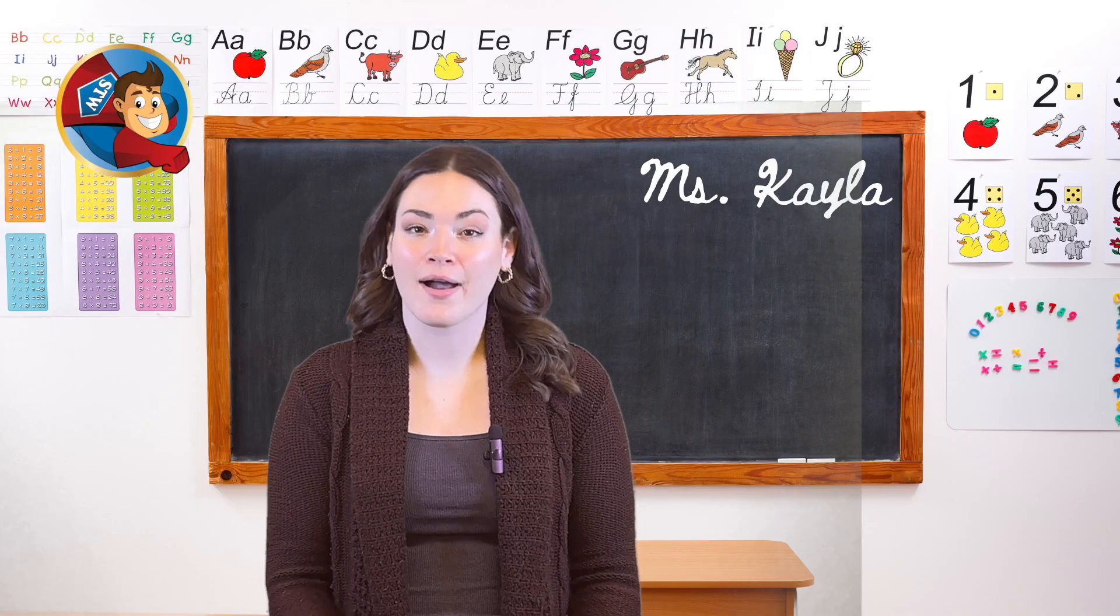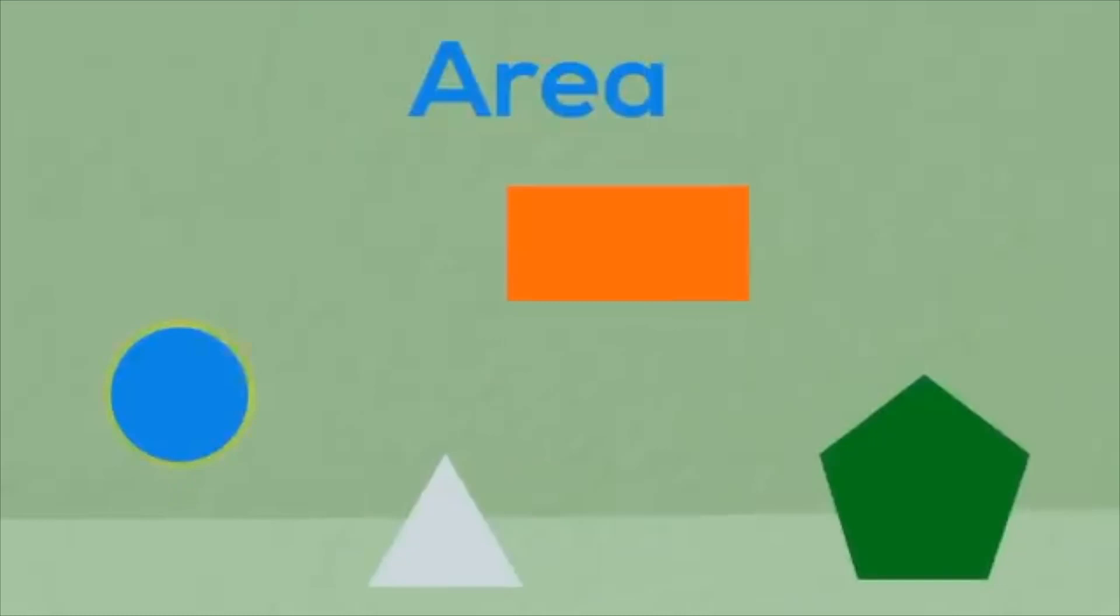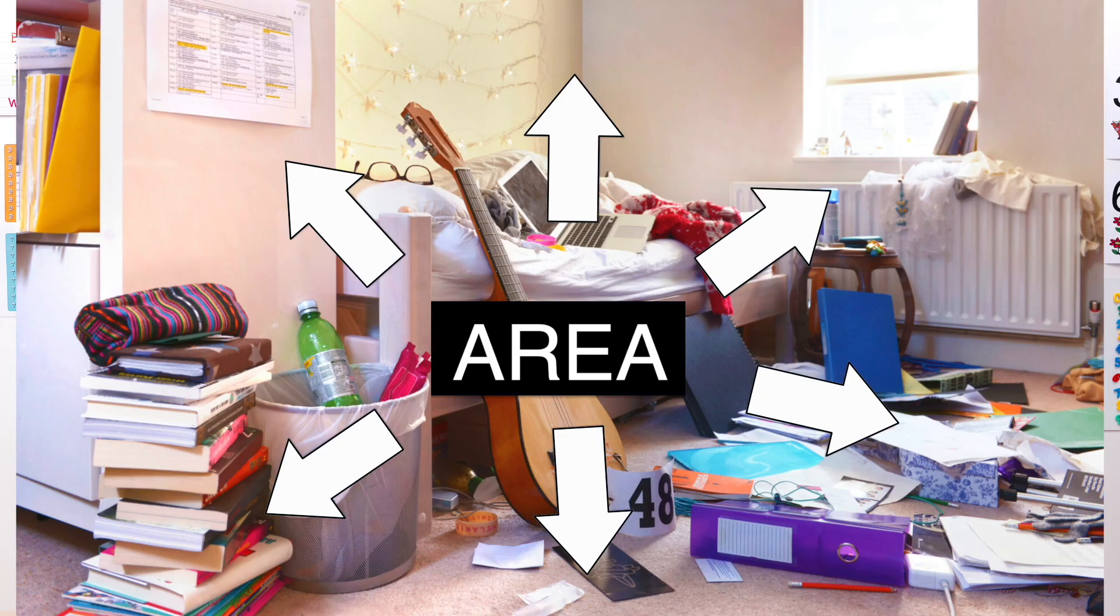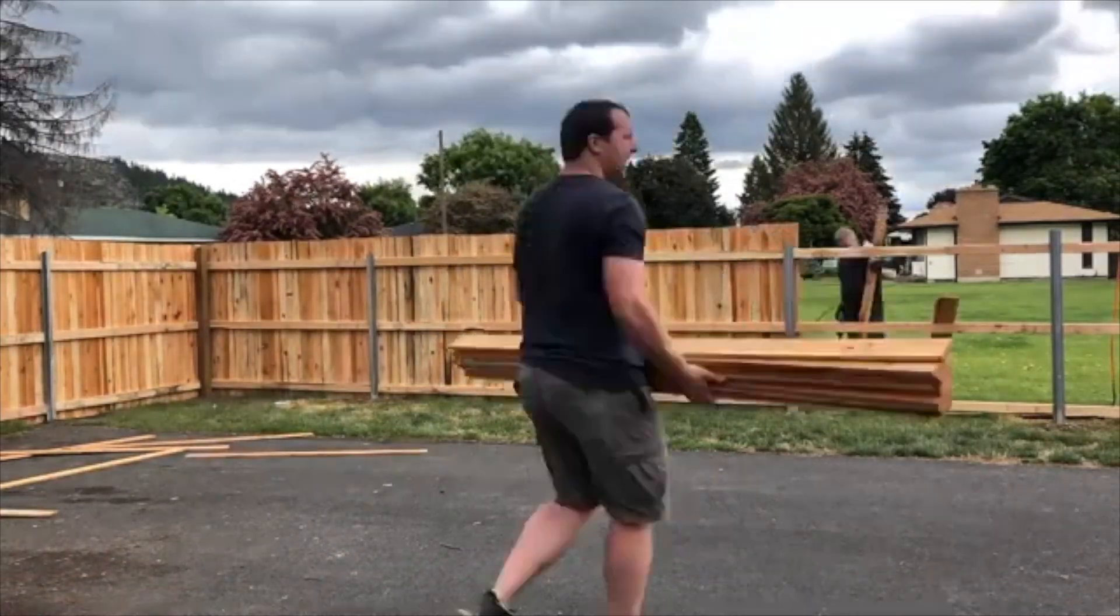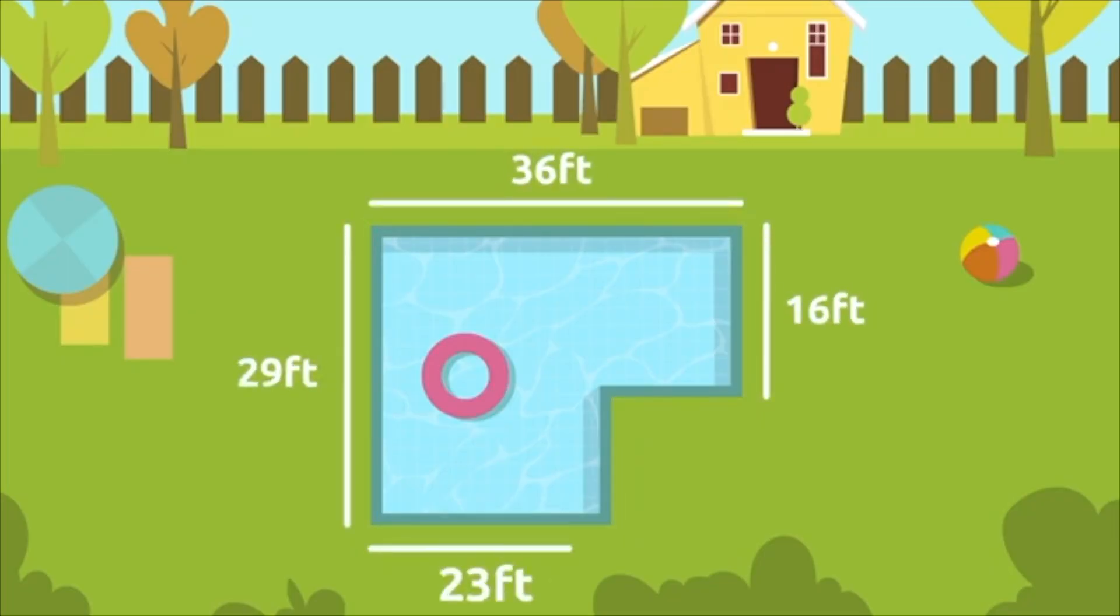Now, let's talk about what area and perimeter actually mean. Area is like the space inside a shape, kind of like how much room there is in your bedroom. Perimeter, on the other hand, is like the fence around your backyard. It's the distance around the outside of a shape.